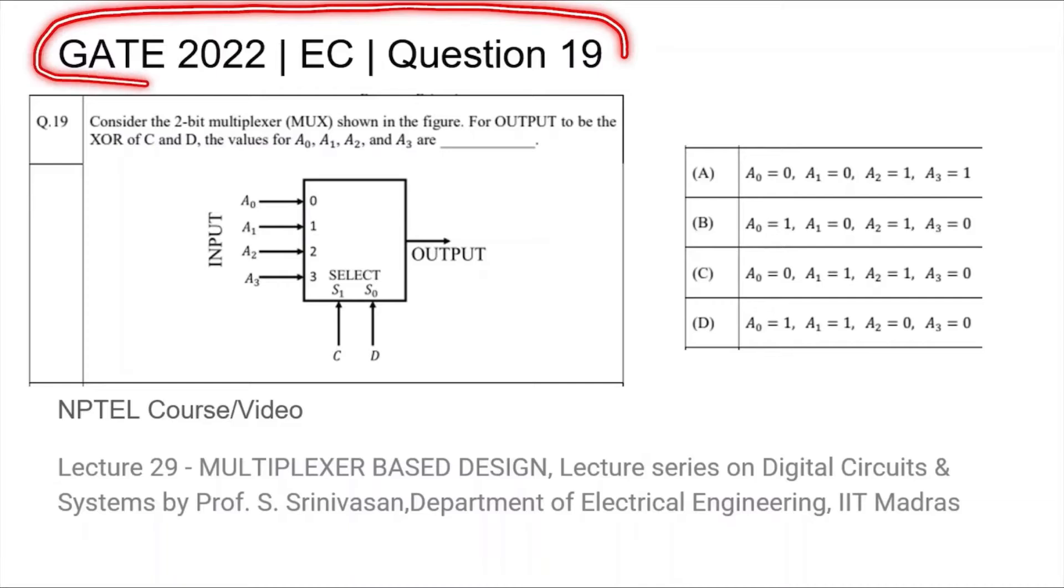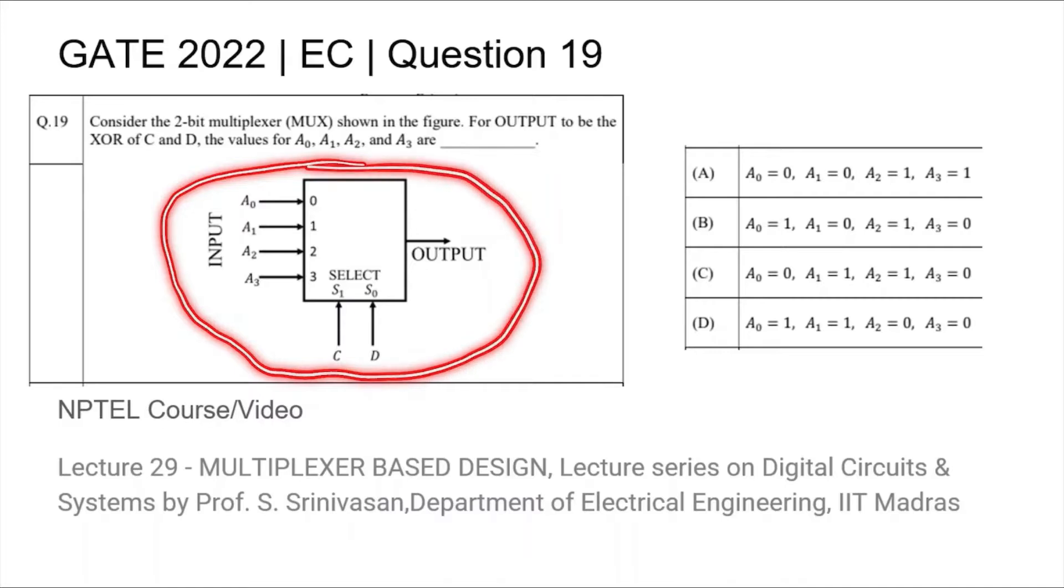This is question 19 from the GATE 2022 EC paper where we are given a 2-bit multiplexer and are asked to implement an XOR of the select line inputs C and D.